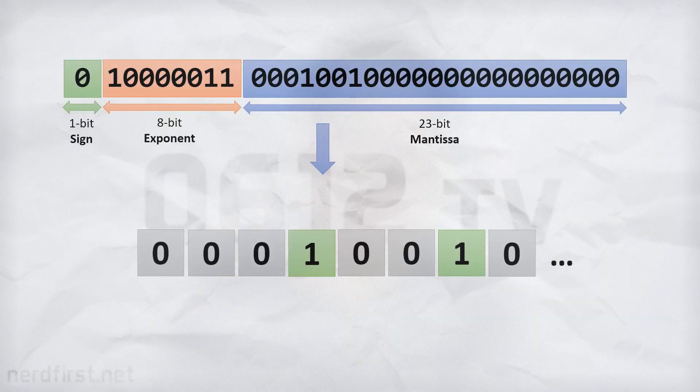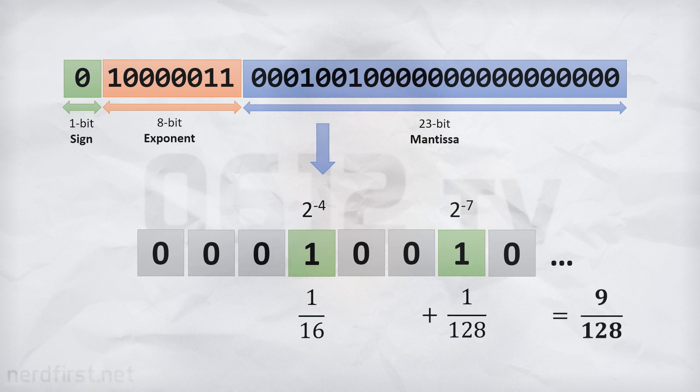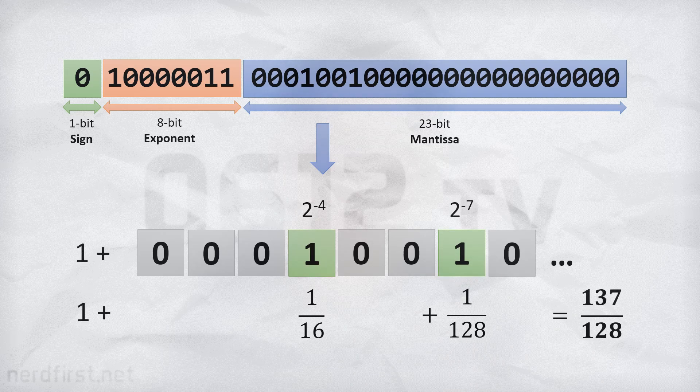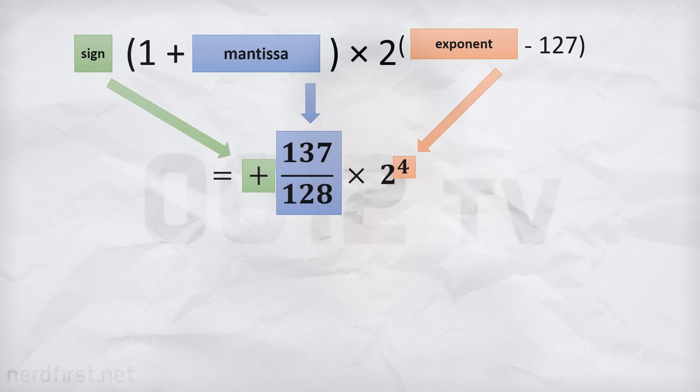Let's now move on to our mantissa — our largest part, consisting of 23 bits. Our mantissa works the same way as fixed point: 2 to the power of minus 1, 2 to the power of minus 2, all negative powers starting from minus 1. We also need to introduce one more thing: 2 to the power of 0. As it turns out, while there is no bit for it, it is on by default — so no matter what the rest of the mantissa says, we always add 1 to it. I'll convert all those numbers into fractions so we don't have to do decimal math yet, and this allows us to plug them into our final equation.